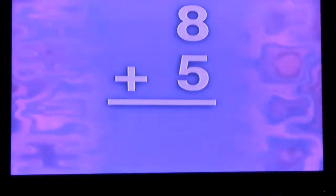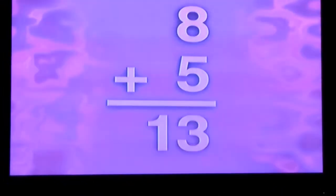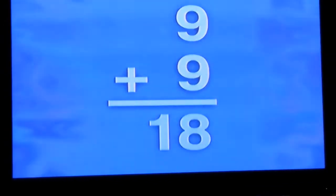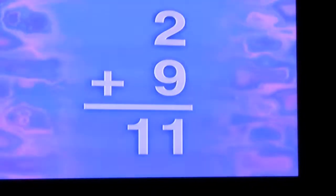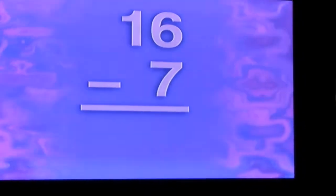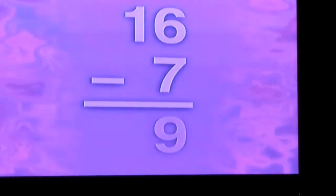12 minus 3 is 9. 8 and 5 are 13. 12 subtract 9 is 3. 9 plus 9 is 18. 2 and 9 are 11. 16 minus 7 is 9.